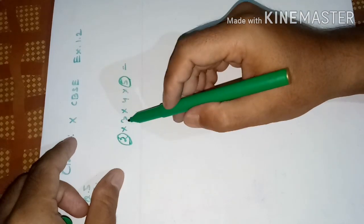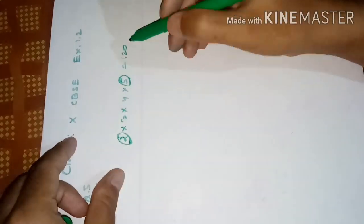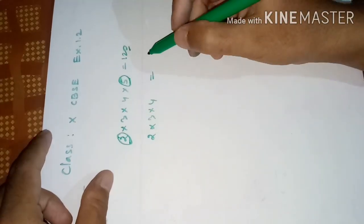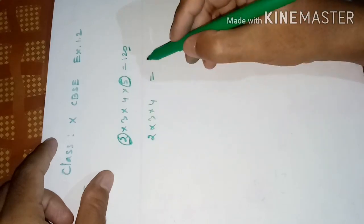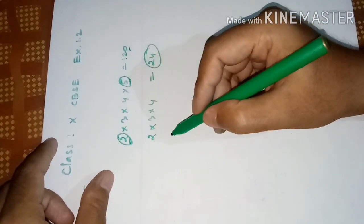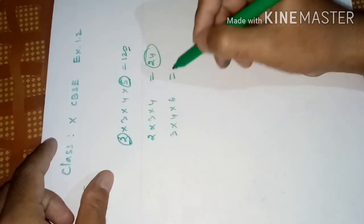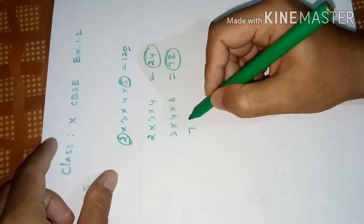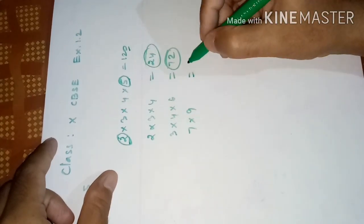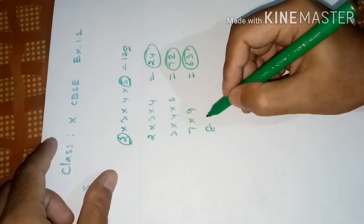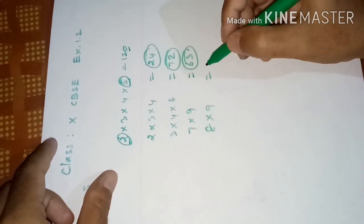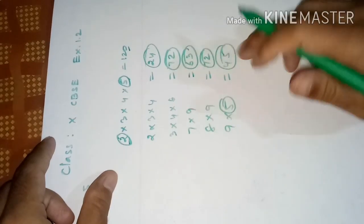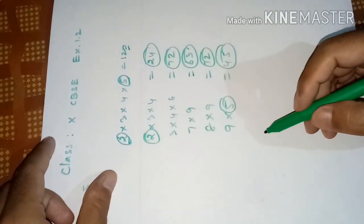Let's verify: 2 × 5 = 10, × 3 = 30, × 4 = 120 — ending with 0. Now 2 × 3 × 4 = 24, not ending with 0. Similarly 3 × 4 × 6 = 72, not ending with 0. And 7 × 9 = 63, 8 × 9 = 72, 9 × 5 = 45 — not ending with 0, even though 5 is there or 2 is there separately.